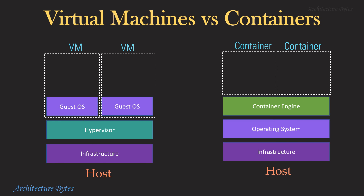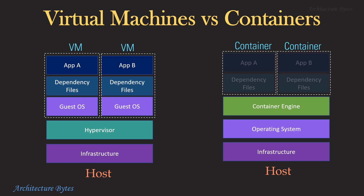On the surface, containers look like virtual machines, but there are important differences. A virtual machine is made up of a physical infrastructure with a hypervisor and guest operating systems that make up the virtual machine. Your application along with dependency files runs on this guest operating system.